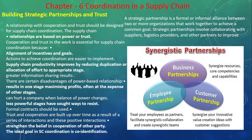Corporation and trust in the work is essential for supply chain coordination. It is very important because of the alignment of incentives and goals. We need to achieve our goals and incentives — if we do not work together as supplier, manufacturer, and team, we will not achieve our incentives and goals. Actions to achieve coordination are easier to implement when you work together.